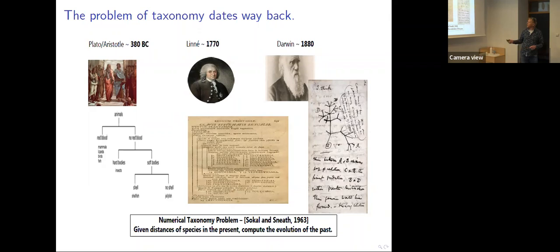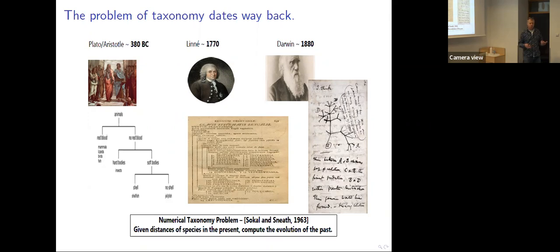With Darwin we start caring because there's a truth behind it — you actually believe this is an evolutionary process. Each of these branching points corresponds to some ancestor, so it has a fuller meaning. In connection with computers, as soon as they started, people began working on this, basically saying: we have some measured sense of distances between the species we see today. Can we try to guess what the evolution in the past was? Things that are closer to each other should have a lower common ancestor.